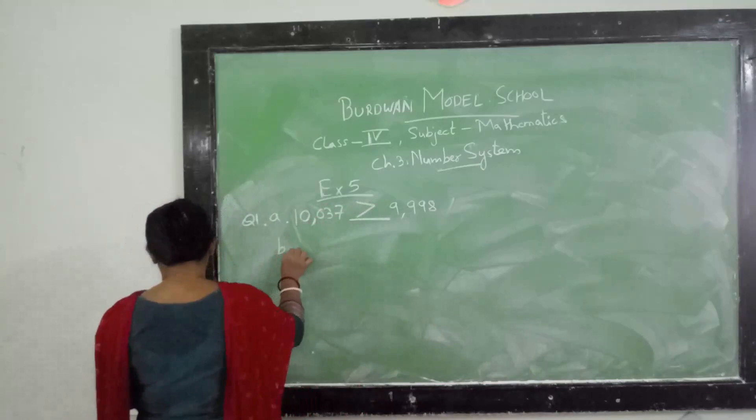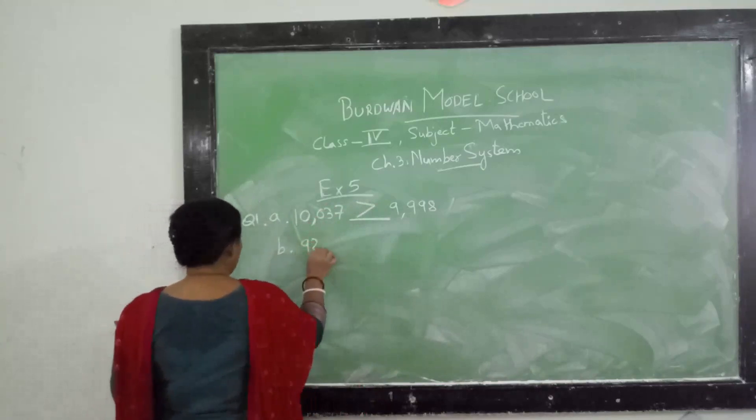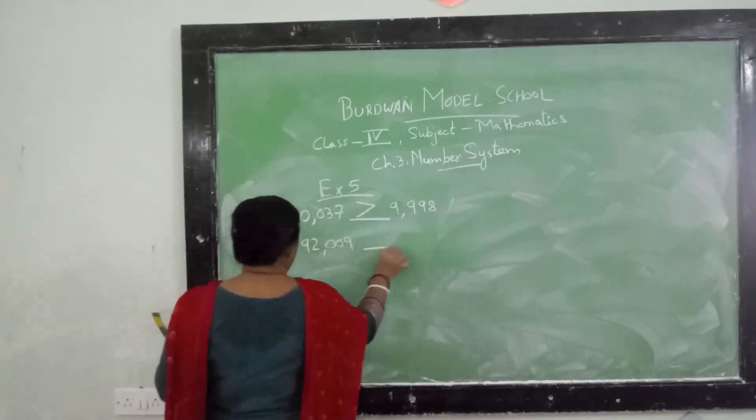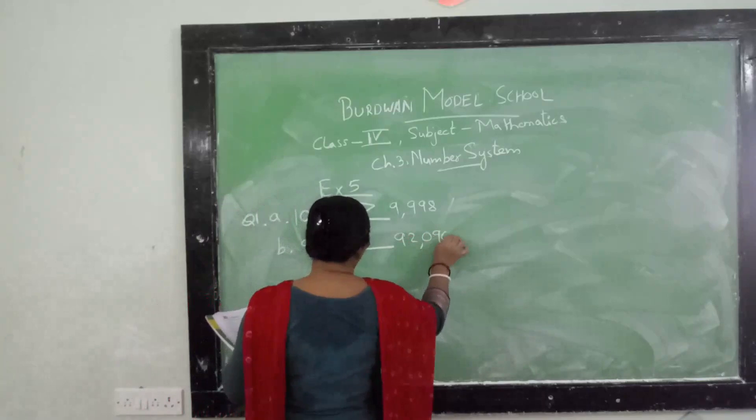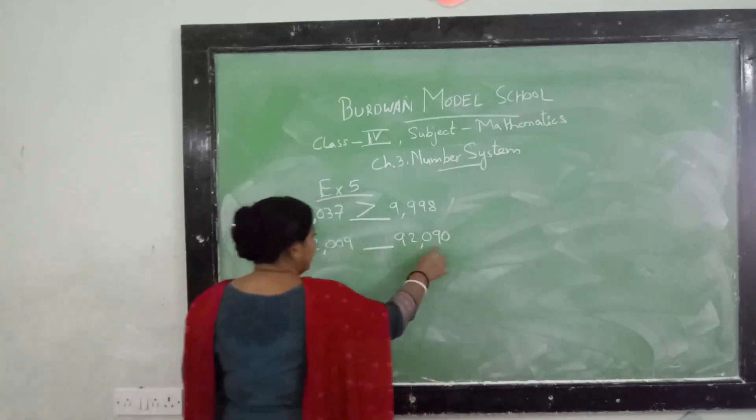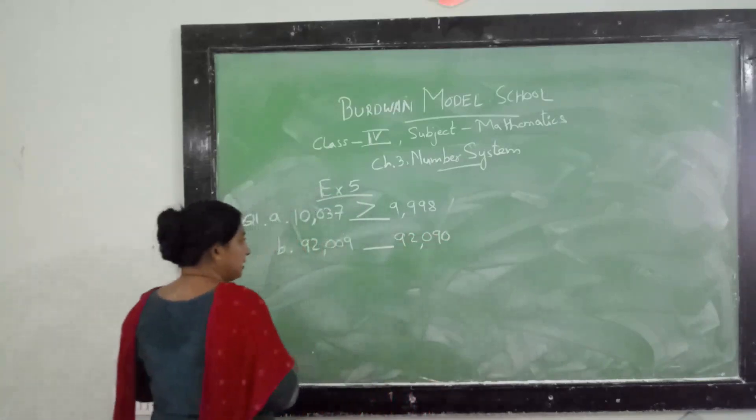Similarly, if I am writing number b, it is 92,009 and the next one is 92,090. Here it is 9 and here it is 90. That means 90 is greater than 9, so you will give a less than sign, clear?